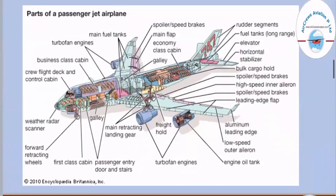Now we will have a look at a larger aircraft. From this picture you might recognize the civil aircraft that airlines use. These large aircraft are generally used in civil airlines. Starting from the nose at the top, we have the weather radar scanner, which helps to acknowledge weather information. Next to that we have the flight deck and control cabin — the cockpit area where the pilots control the aircraft.